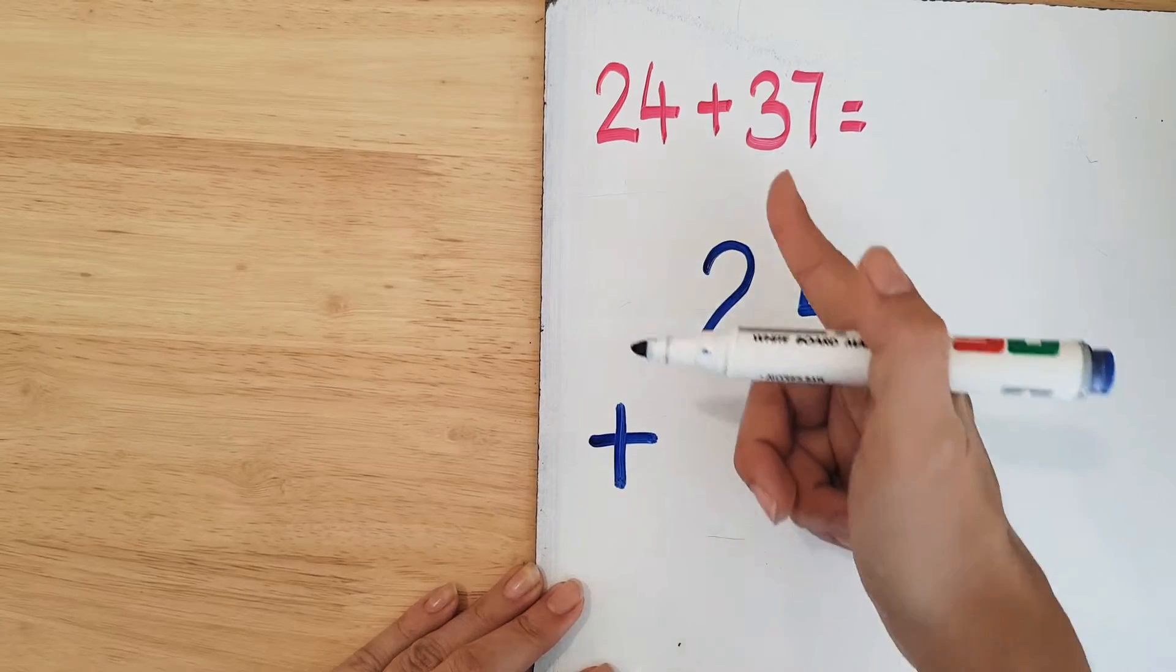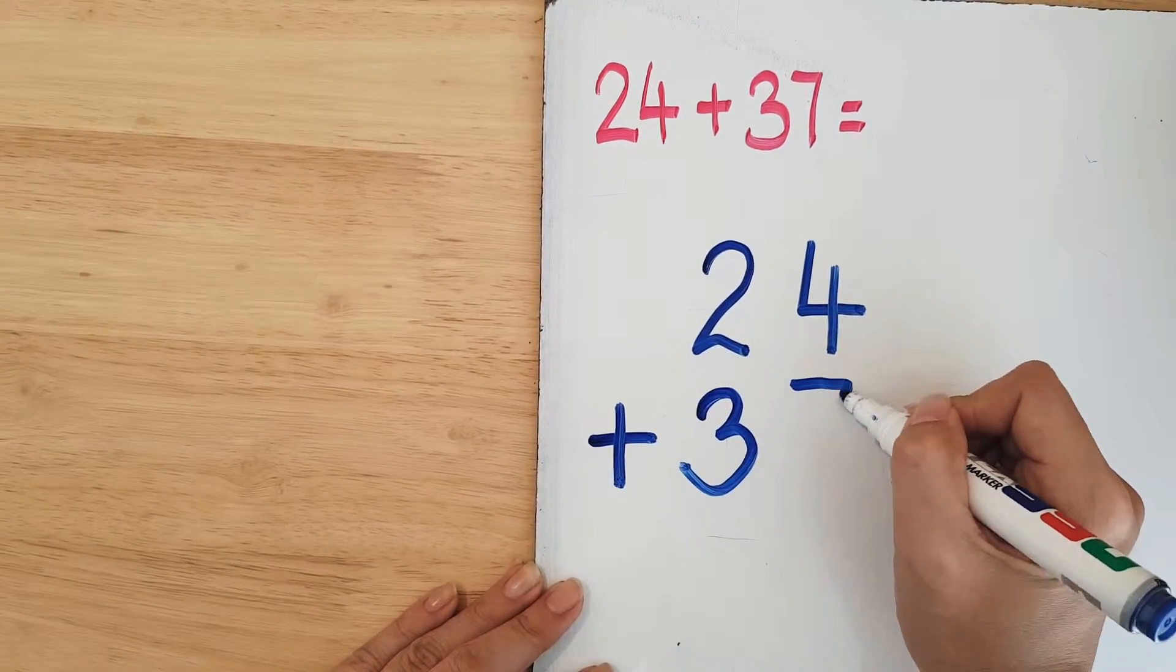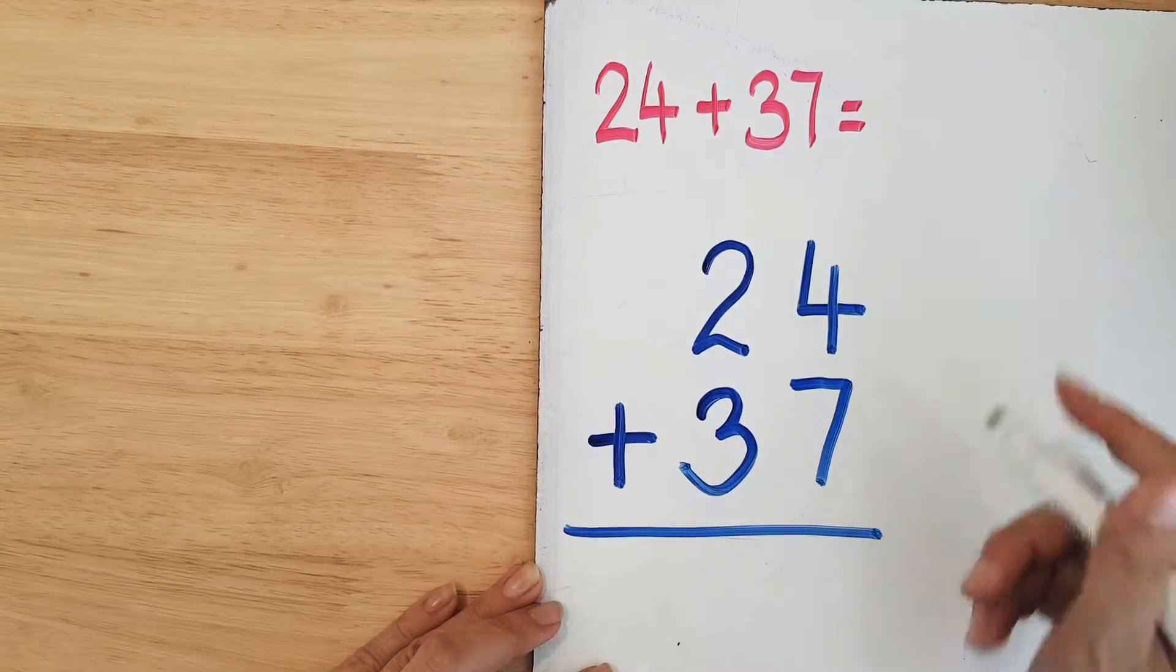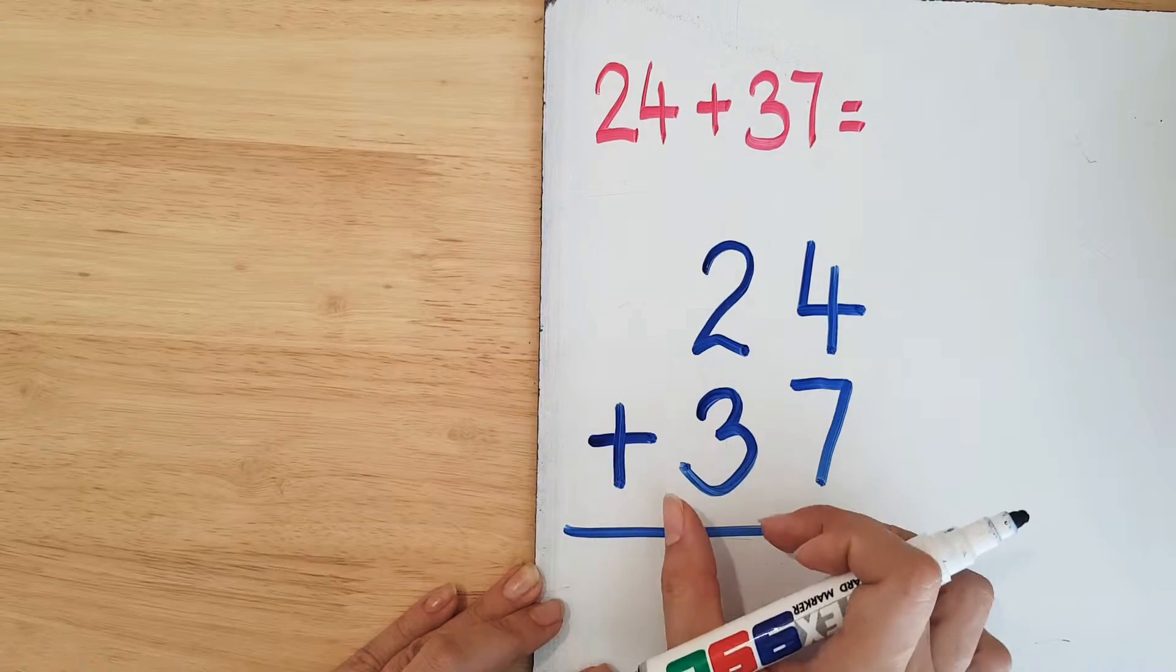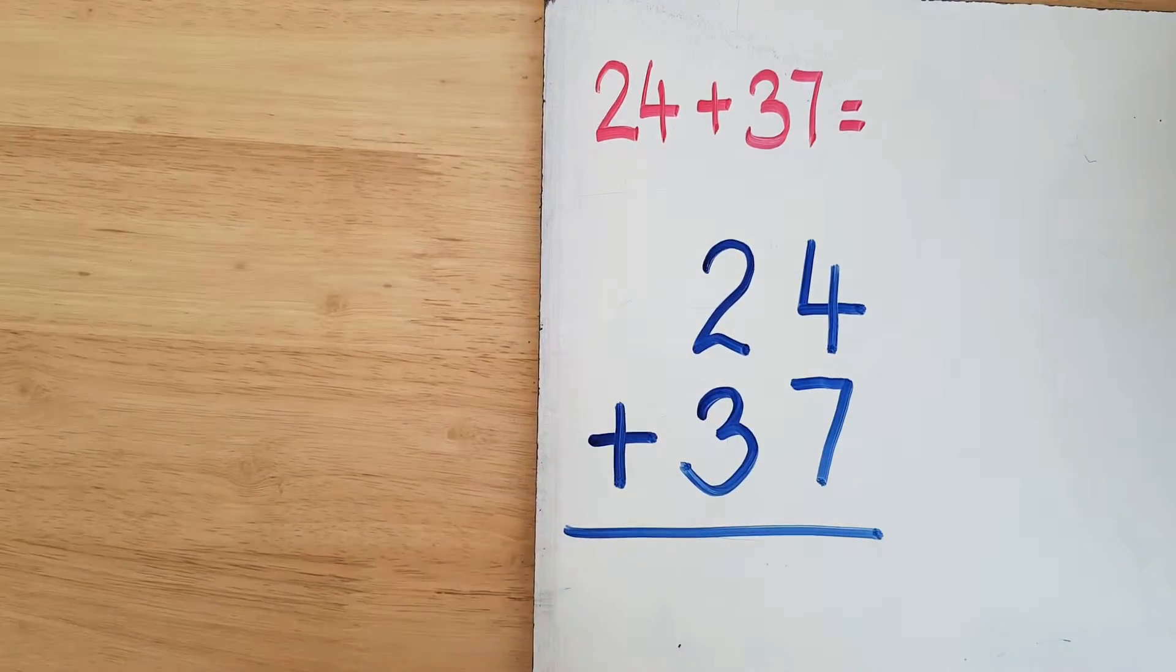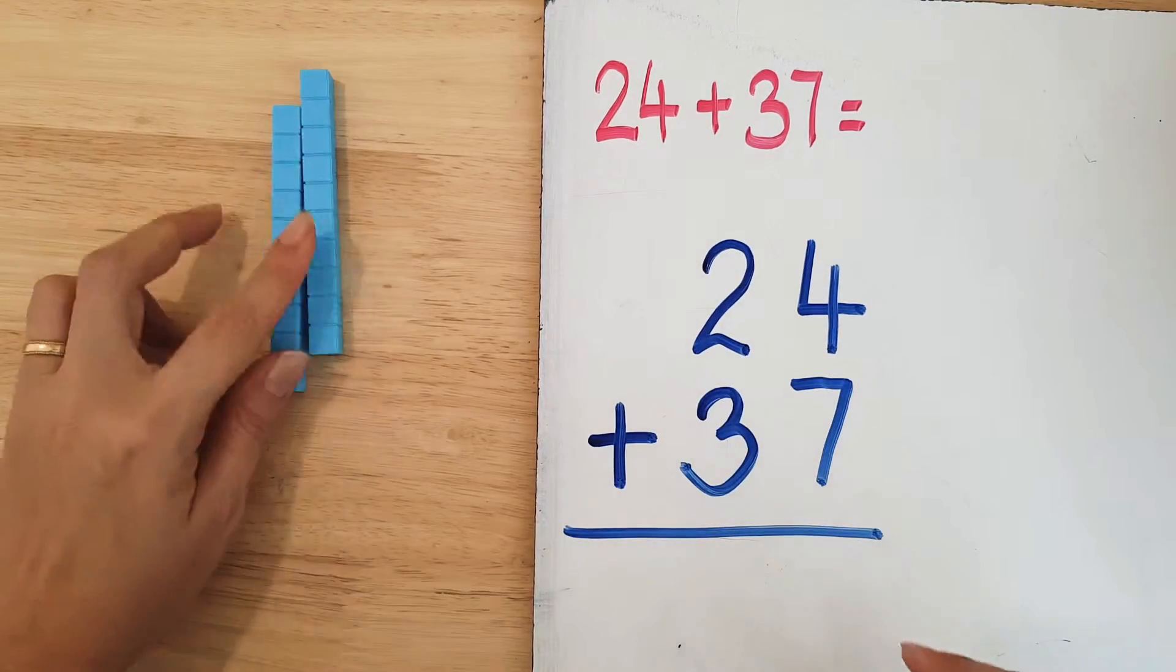You notice that I have the ones aligned and I have the tens aligned. So I'm going to go ahead and show you the blocks. We have 24, two tens and four ones.